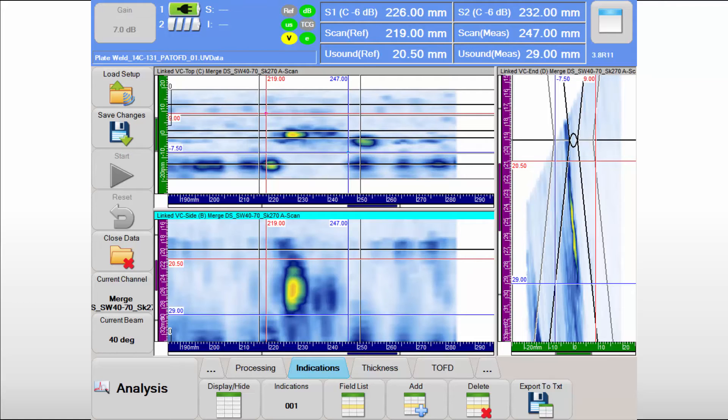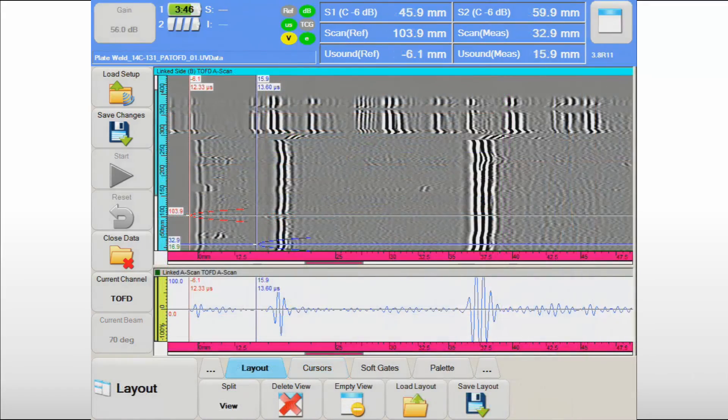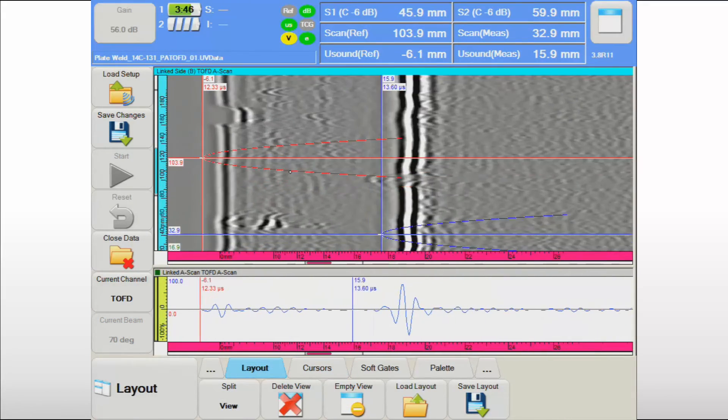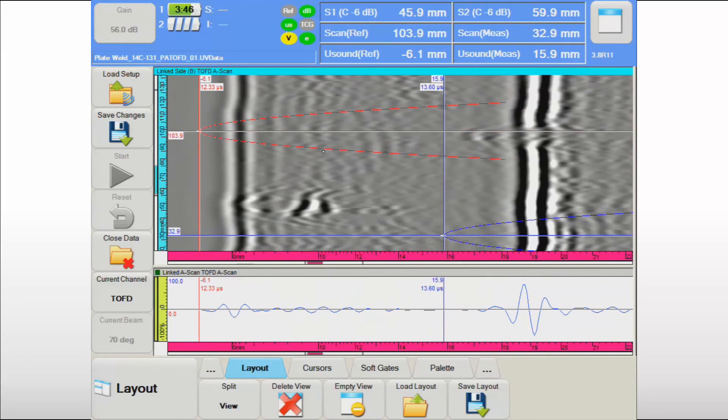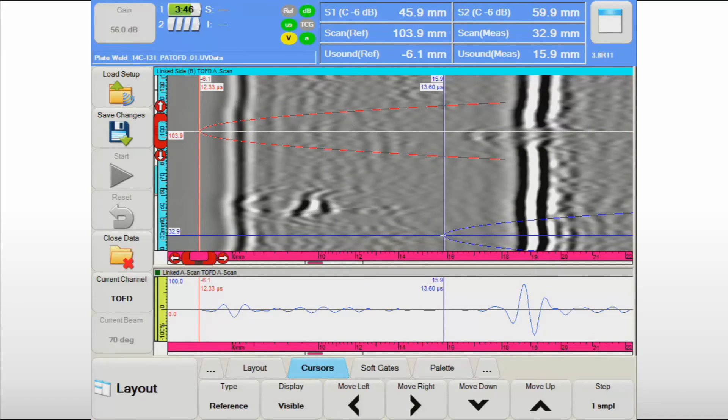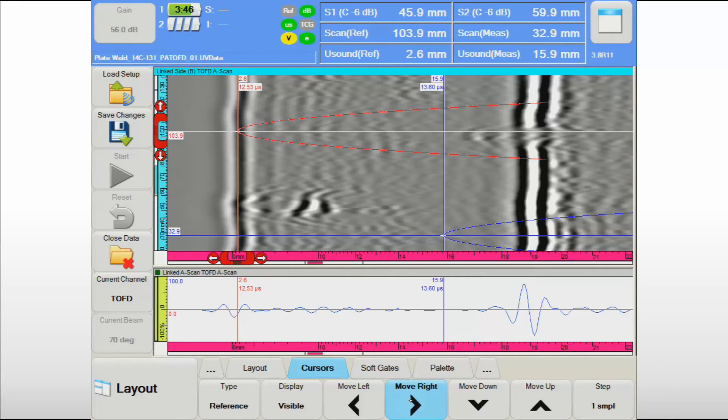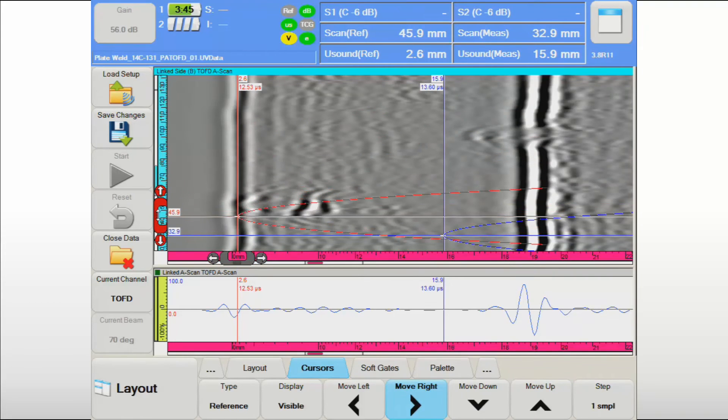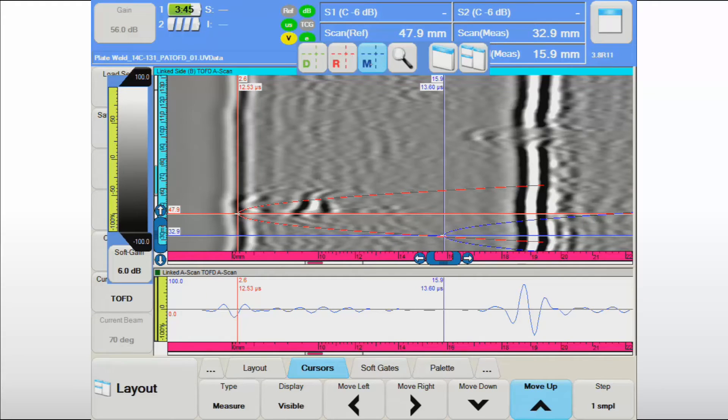The TOFD technique is very powerful for detection and sizing of embedded flaws, and for accurate height sizing of cracks. UltraVision Touch software includes all measurement tools to facilitate the analysis of TOFD data. Additionally, the software provides the typical processing tools recommended by the applicable codes, like lateral wave straightening and lateral wave removal. The lack of fusion that was clearly detected in the pulse echo phased array data is confirmed in the TOFD data.